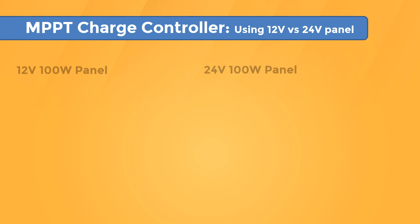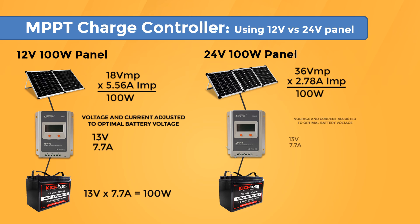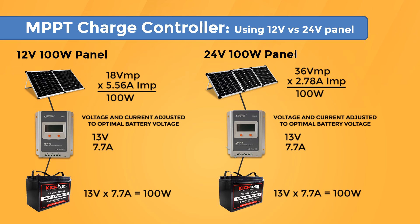Now let's do that with an MPPT charge controller. The 18 volts is dropped down to 13 volts at a ratio of 1.38 (18V ÷ 13V = 1.38), increasing the current by 1.38 to 7.7 amps: 13V × 7.7A = 100W. The 24-volt panel's 36 volts is dropped to 13 volts with a ratio of 2.7 (36V ÷ 13V = 2.7), so the current is raised by 2.7 to 7.7 amps — the same voltage and current output as the 12-volt panel. We're able to use all 100 watts of the 24-volt panel in the 12-volt battery bank, getting all the power available.